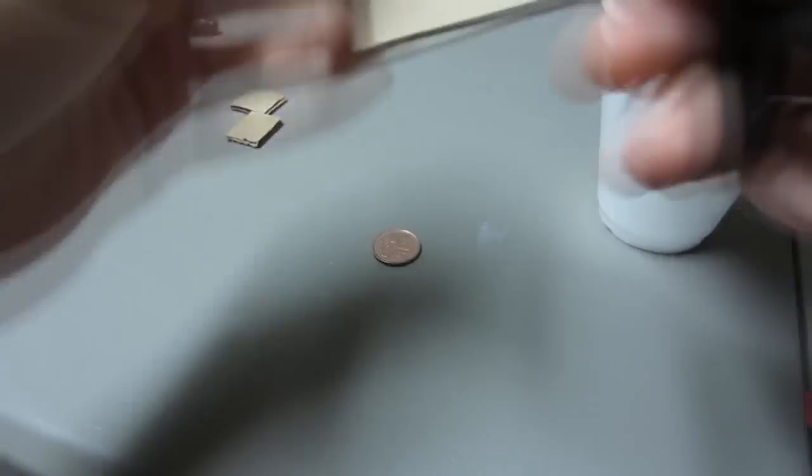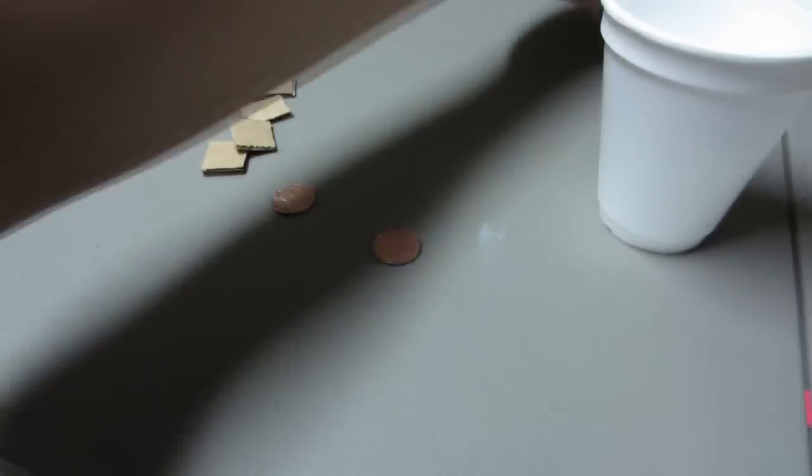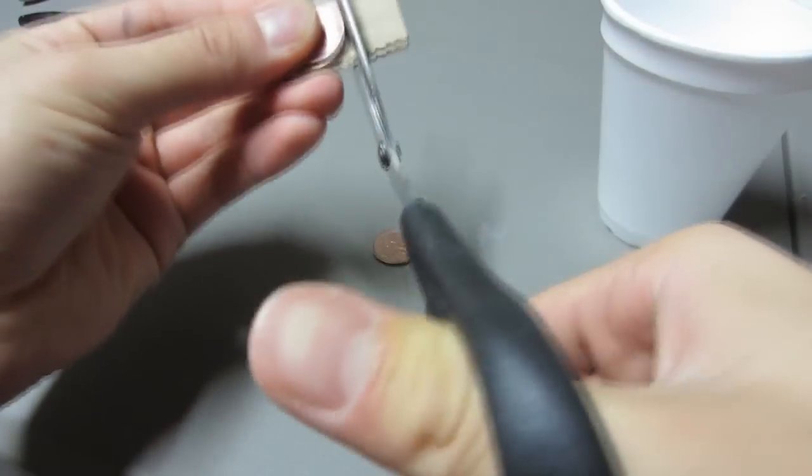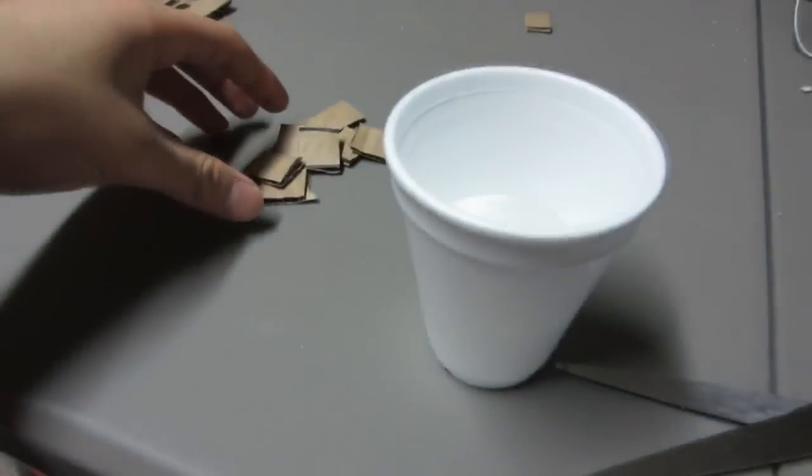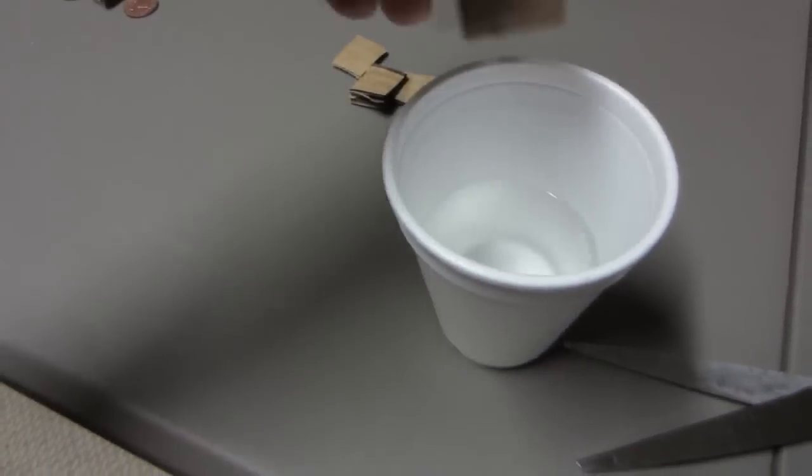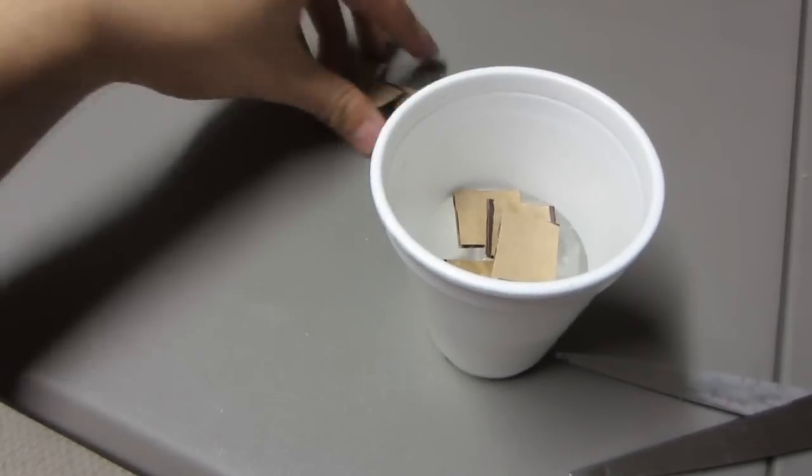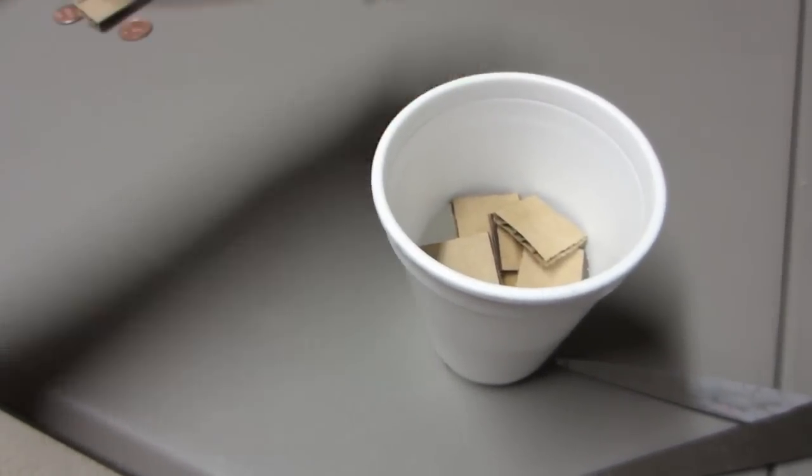From there I went ahead and mixed salt with water to get our electrolytic solution. Now you can also use vinegar or lemon juice, it doesn't really matter. As long as it's citric it'll work. Now I cut about nine strips here, but you guys can cut as many as you want depending on how strong you want your battery to be. After you're done, just drop your cardboard into the vinegar and let it soak up.